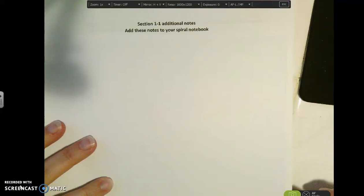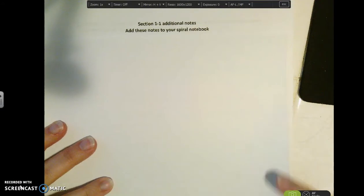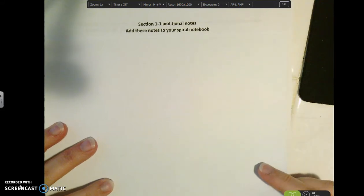Alright, these are some additional notes that you can add to your spiral notebook for section 1.1. A copy of the blank page is available in this section and you can just look at the video to get the answers.